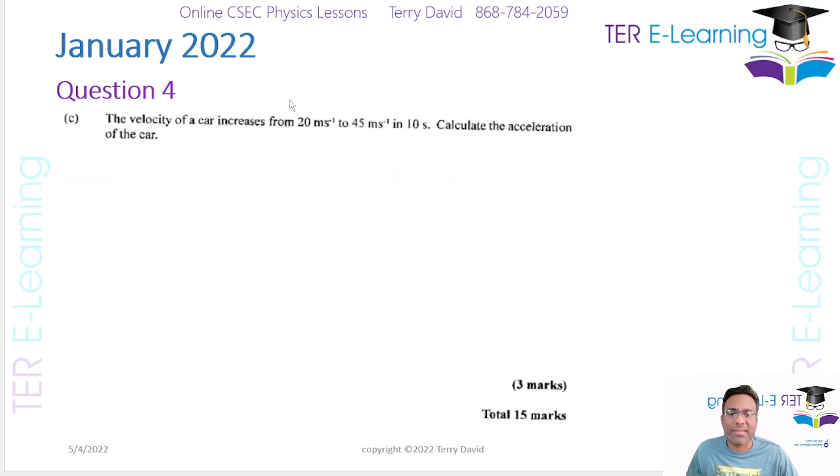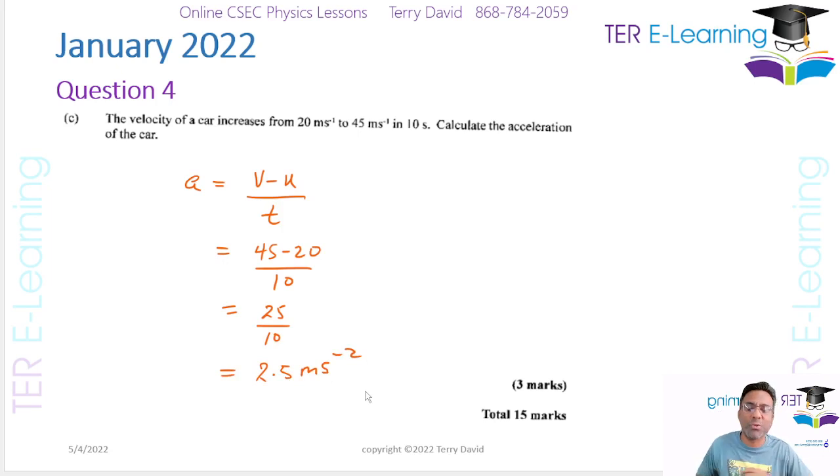Now the velocity of the car increases from 20 to 45 in 10 seconds. Calculate the acceleration of the car. Acceleration is given by V minus U divided by T. That's 45 minus 20 divided by 10, which equals 25 divided by 10, which is 2.5 meters per second squared.